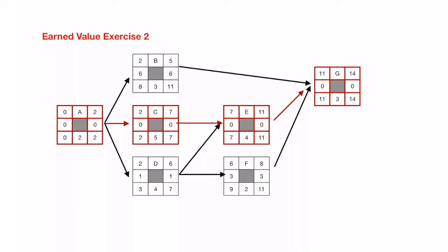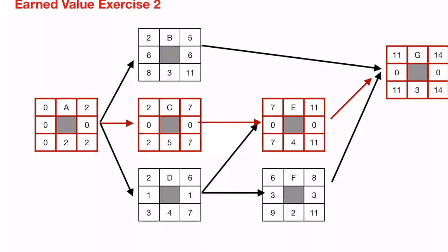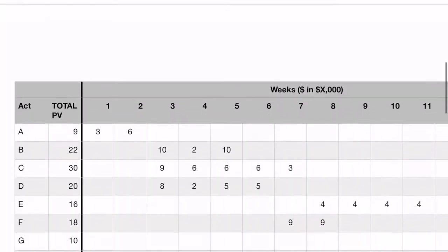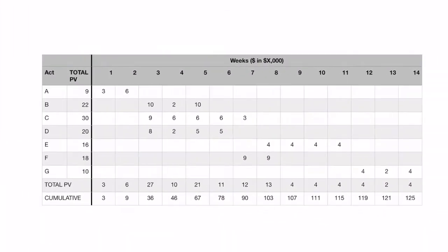Let's take a look at this next earned value exercise. As previously, we have a network diagram that provides us with information about the critical path, but the thing we're most interested in here is the time-phase budget, because this gives our project baseline and allows us to compare how we're doing at different times as project work is actually being done.